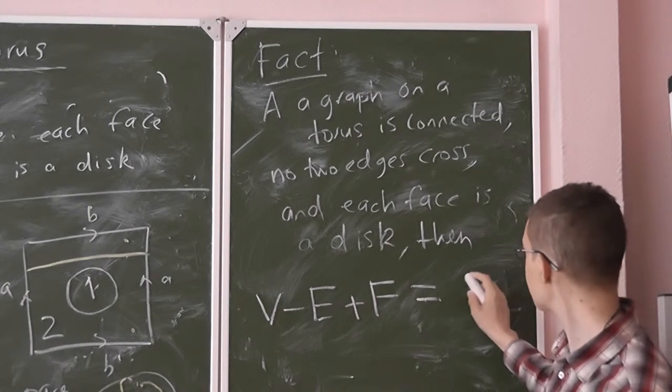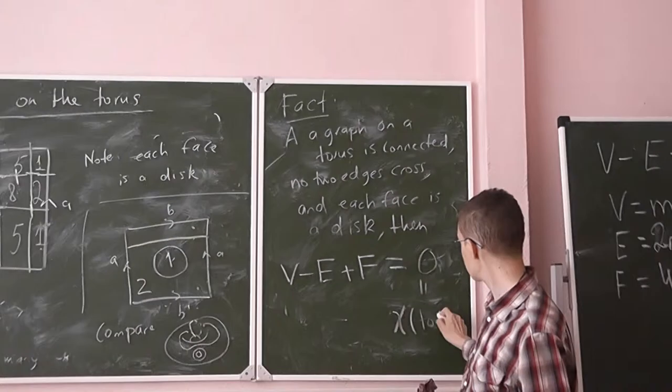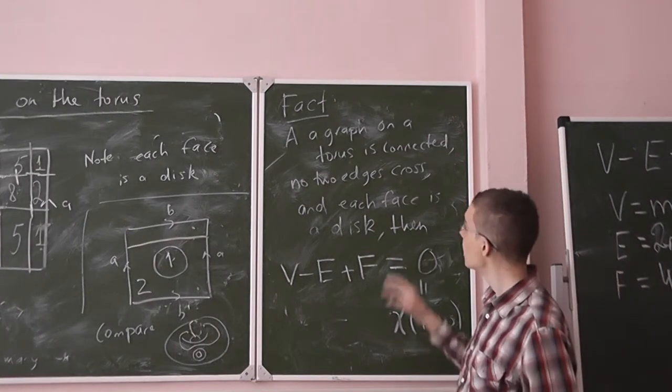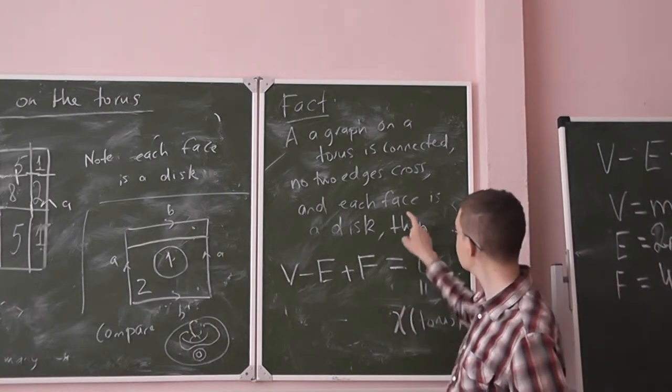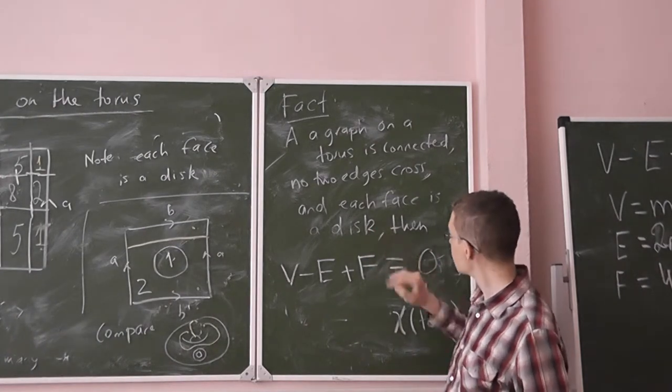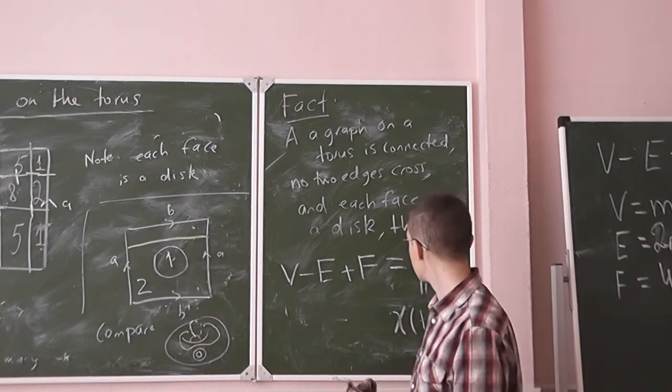That's the Euler characteristic, two minus two. If you have a graph on a torus, it's really important that you have this property. It's automatic for sphere, but you don't necessarily have that for the torus, as we saw.